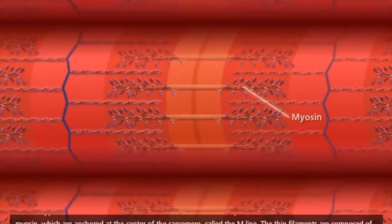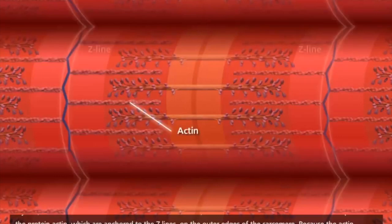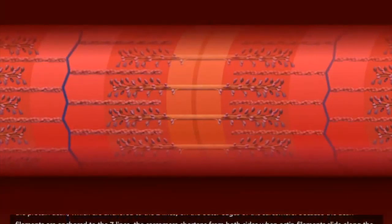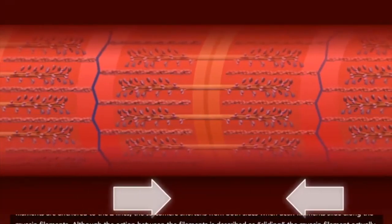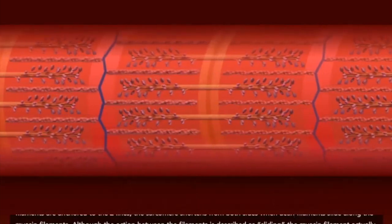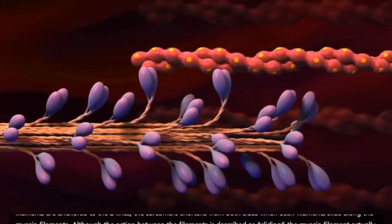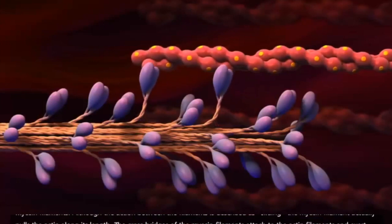The thick filaments are myosin, which are anchored at the center of the sarcomere, called the M line. The thin filaments are composed of the protein actin, which are anchored to the Z lines on the outer edges of the sarcomere. Because the actin filaments are anchored to the Z lines, the sarcomere shortens from both sides when actin filaments slide along the myosin filaments.